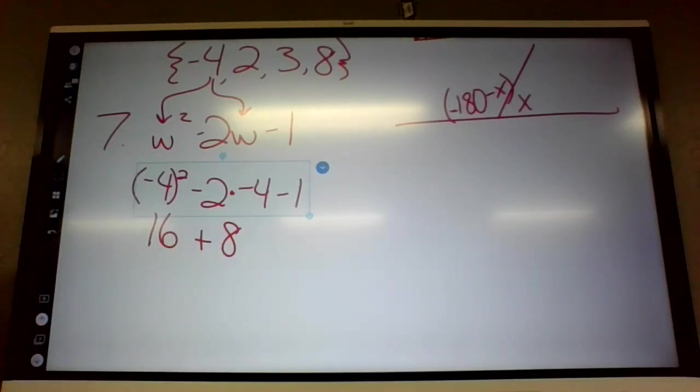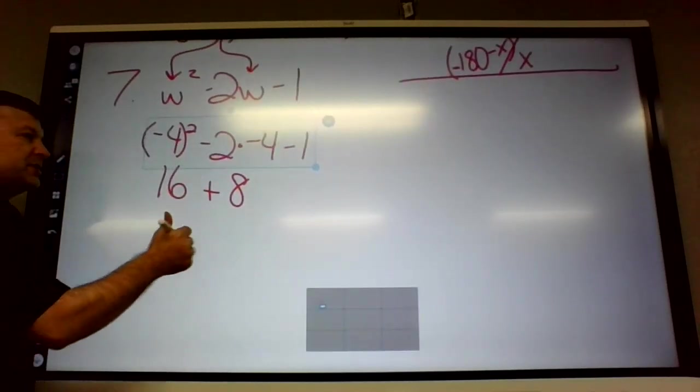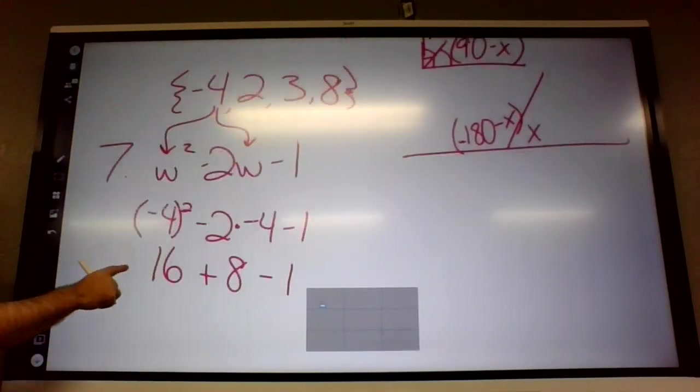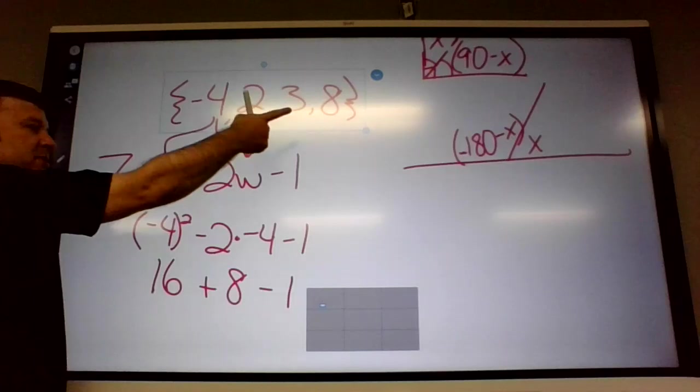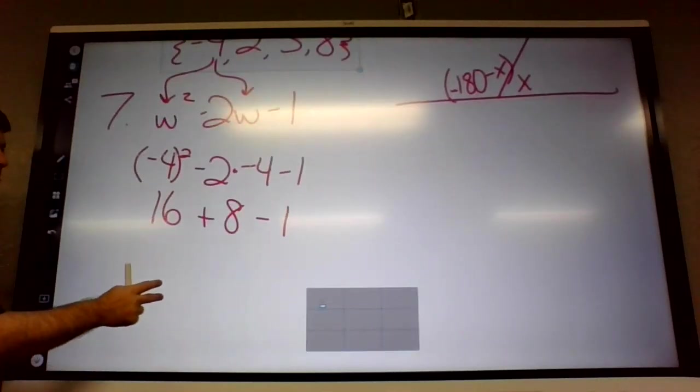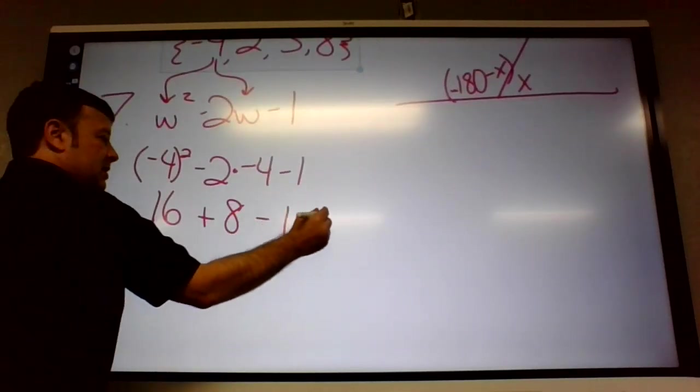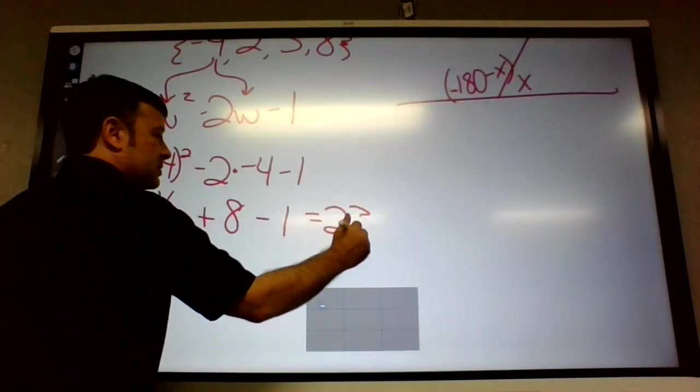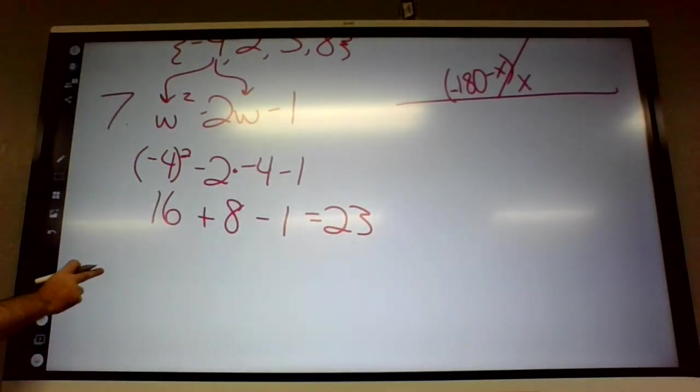By the way, the calculator can do order of operations. It should, anyway. But if you don't plug it in right, like with the parentheses on that, it would mess up. Now that doesn't matter on the positives, because when you square positives, it's just going to stay positive. But on that first one, on six and seven, you could get it wrong. So 16 plus eight is twenty-four minus one is twenty-three.